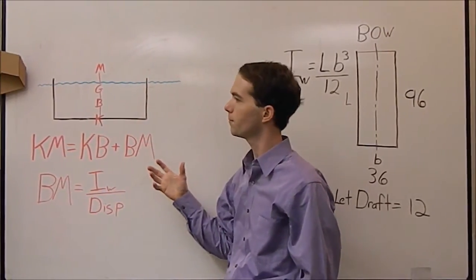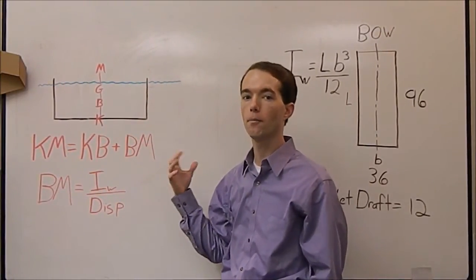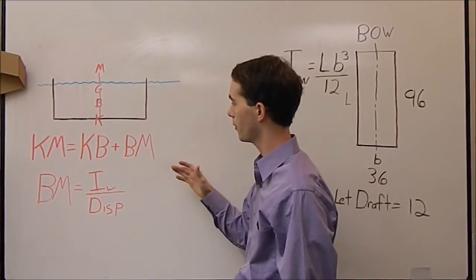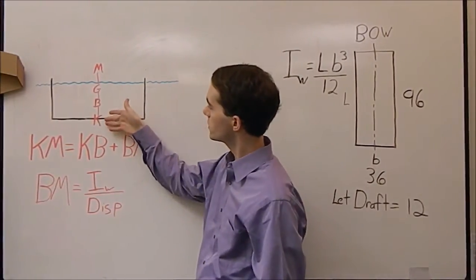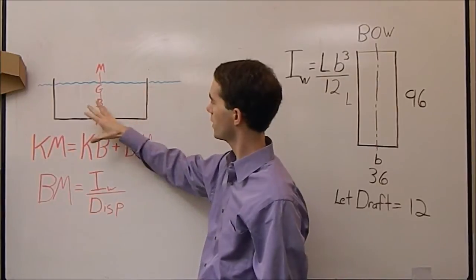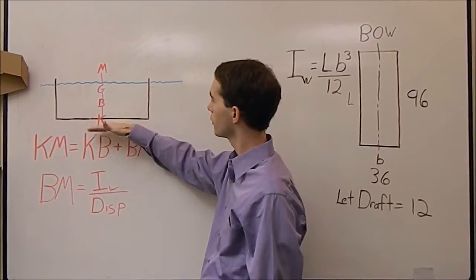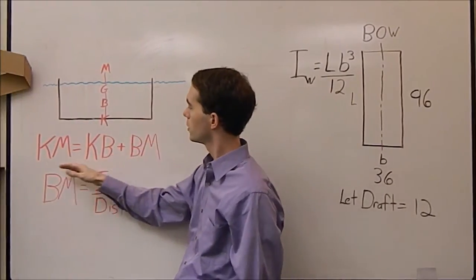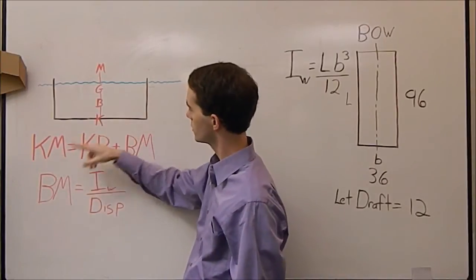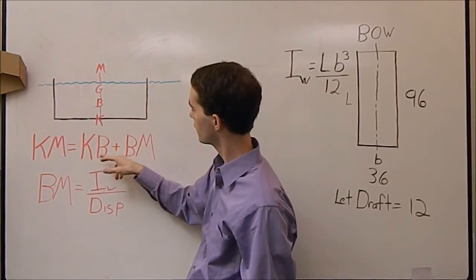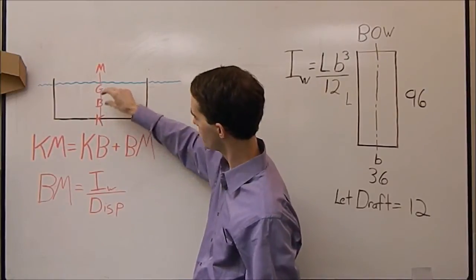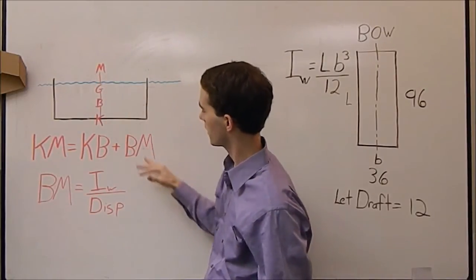You can think of the metacenter as the pivot point of a pendulum. I'll get to explain that here in a minute. As you can see, all these things, when the boat is not heeled or tipped at all, they lie in a straight vertical line. Such that KM, which is the distance from the keel to the metacenter, is obviously KB, this little segment, plus BM, this segment.